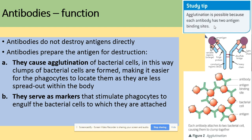There are two ways of doing it. First, antibodies cause agglutination. Agglutination is like joining bacteria together — joining them to make clumps of bacteria to make it easier for phagocytes to locate them, as they will be less spread out within the body. Another function is that antibodies serve as markers, stimulating phagocytes to engulf the bacteria cells to which they are attached.